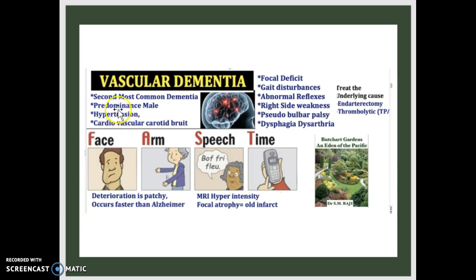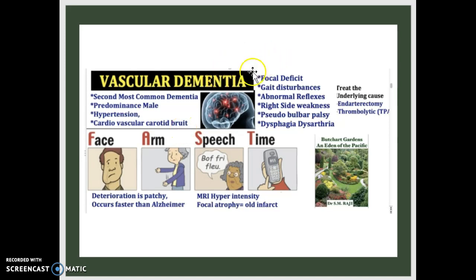Vascular dementia is the second most common dementia. There's a predominance in males because of hypertension and carotid artery stenosis. Key features include focal deficits, gait disturbances, abnormal reflexes, and right-side weakness.